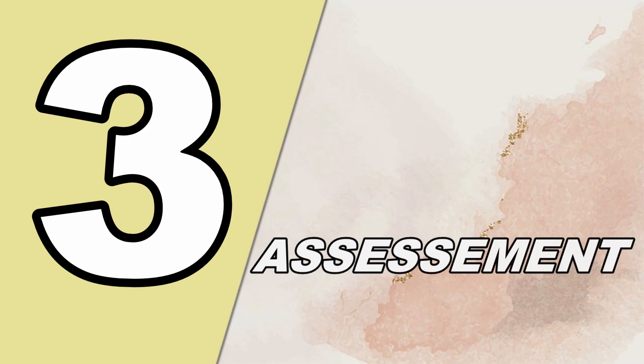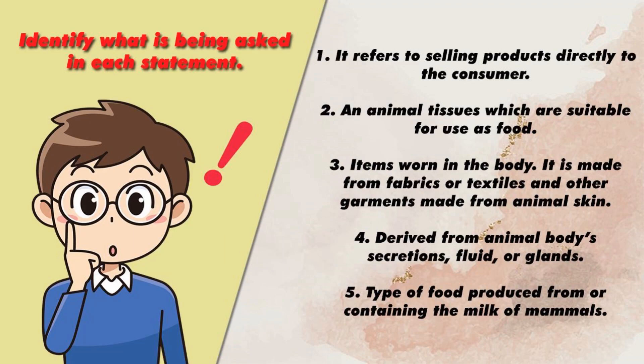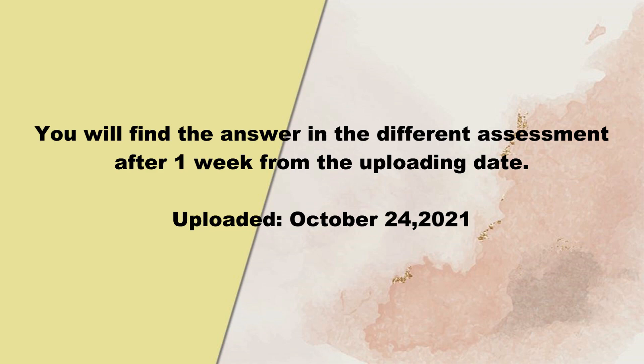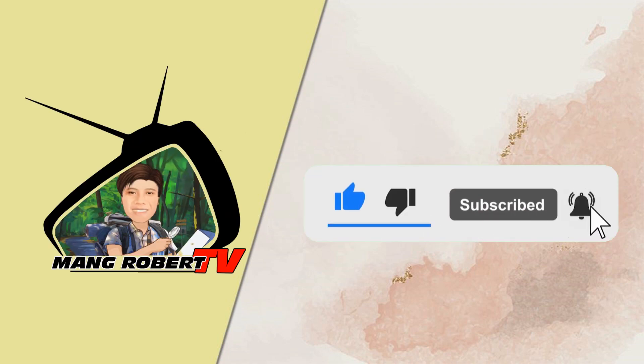Let us assess what you learned. Identify what is being asked in each statement. One: It refers to selling products directly to the consumer. Two: Animal tissues which are suitable for use as food. Three: Items worn on the body made from fabrics, textiles, or other garments made from animal skin. Four: Derived from an animal body's secretions, fluid, or glands. Five: A type of food produced from or containing the milk of mammals. And that concludes our lesson for this week. Thank you very much.